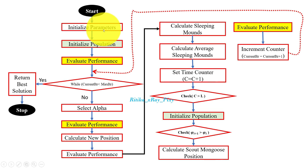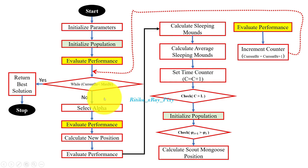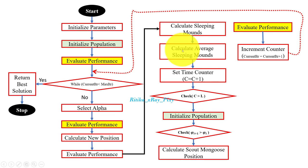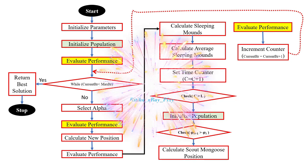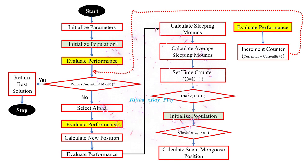In summary: first we initialize the algorithm parameters, then initialize positions for the agents and evaluate their performance. According to mongoose gender and age, they perform different duties — babysitter, scout, guard, attacking predator, or repelling intruder. We select the alpha group, babysitters, and scouts, calculate new positions, discover new sleeping mounds, calculate values for the new mounds, check the babysitter exchange rate, calculate scout positions, evaluate performance, and increment the counter, repeating the loop. That's all about this video. If you have any questions, you can comment below. Thanks for watching.